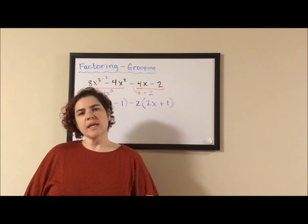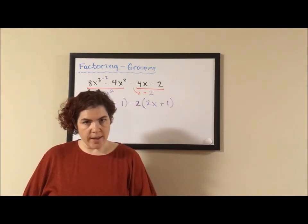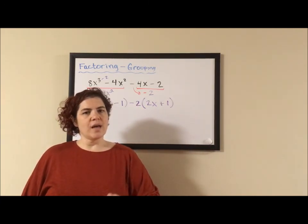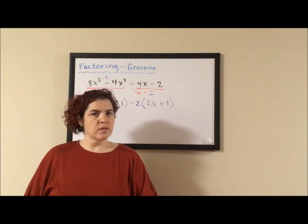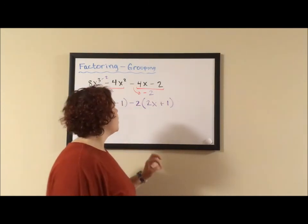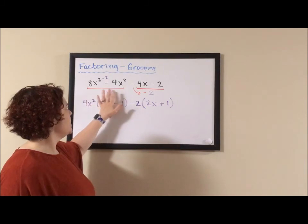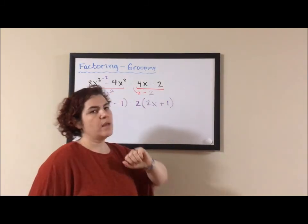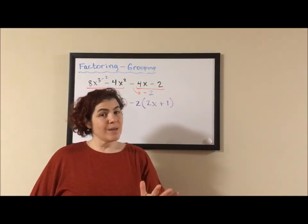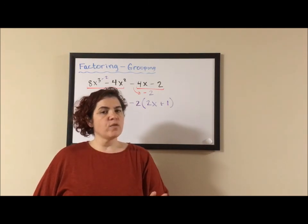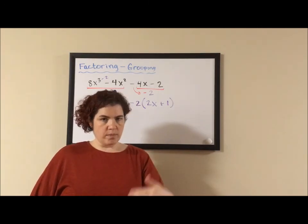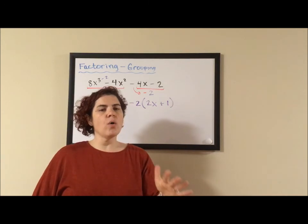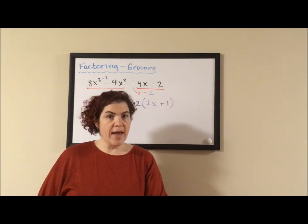On the surface it looks like the answer to this question is prime, but I missed a really important first step which is you should always check to see if there's a greatest common factor that comes out. Now I skipped it on purpose. I did it for two reasons. One, if a four-term polynomial ends up being prime, always double check for your greatest common factor.